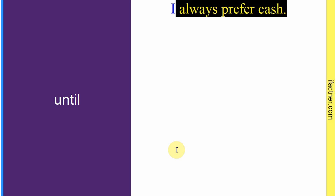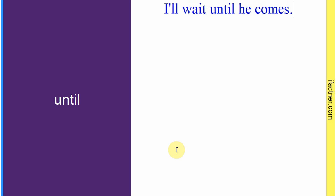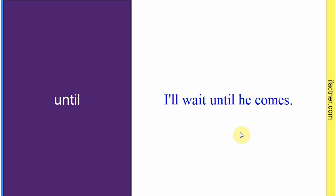Word hai: 'until'. Sentence: 'I will wait until he comes.' Mein us waqt tak intezaar karunga jab tak woh aaye. Toh 'until' ka matlab hota hai 'jab tak'. Sentence banaaya: 'I will wait until he comes', ya 'until you are finished.'